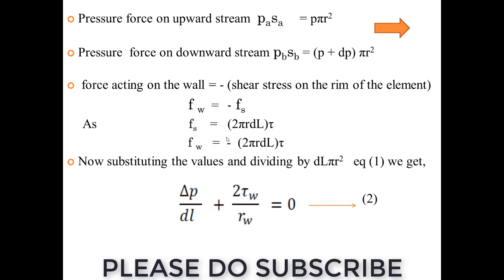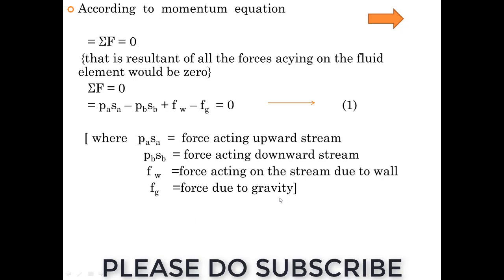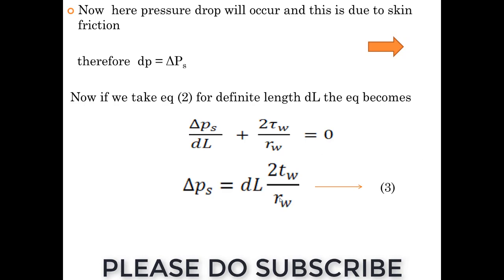The circumference of the rim is 2 pi R dL, the thickness, and it is times tau. That is a shear stress times area which is shear force. Now we are trying to substitute and dividing it by dL pi R squared in equation 1, and this is what we will get.